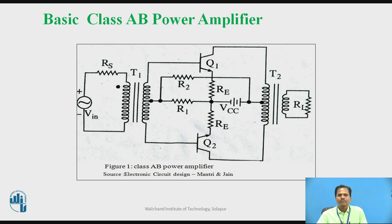During positive half cycle of input AC signal, transistor Q1 conducts, and during negative half cycle of input AC signal, transistor Q2 conducts. When Q1 conducts, the current flows through the upper half part of the primary of transformer T2. When Q2 conducts, the current flows through the lower half part of the primary winding of transformer T2. Due to transformer action, voltage and current are induced on the secondary of transformer T2 and thus AC power is delivered to load resistor RL.